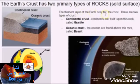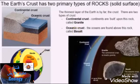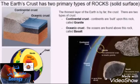The thinnest layer of the earth is by far the crust. There are two types: continental crust, which the continents are built upon, called granite; and oceanic crust, found below the oceans, called basalt. When we start talking about where we get our resources from, we're really talking about continental crust.